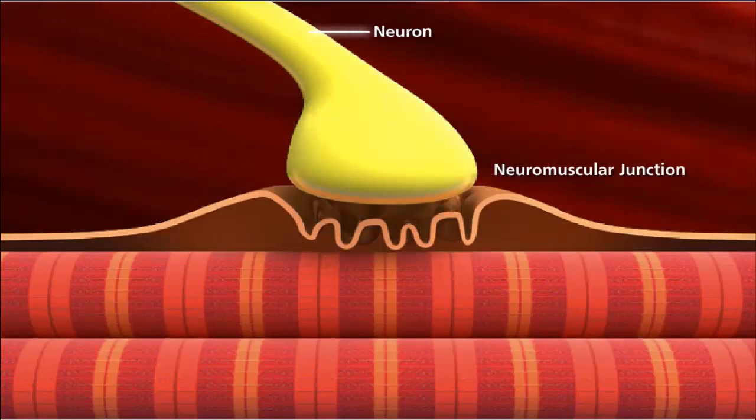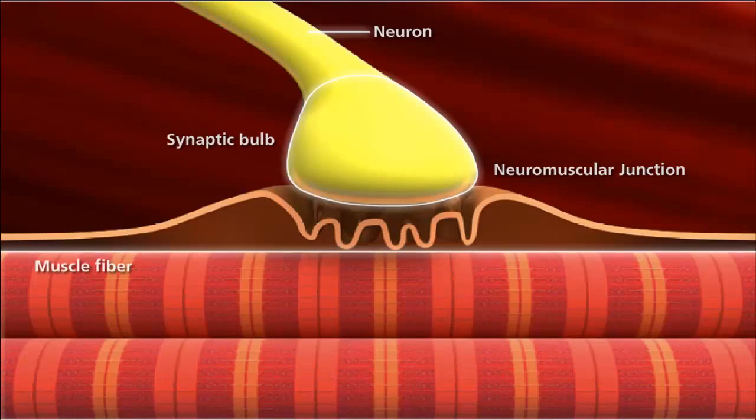A neuromuscular junction is the site of the signal exchange. This is where the synaptic bulb of an axon terminal and muscle fiber connect.